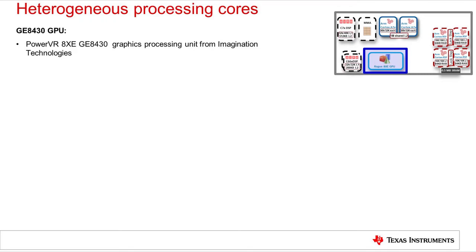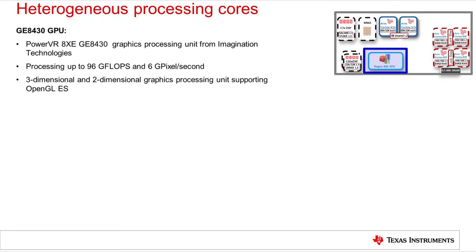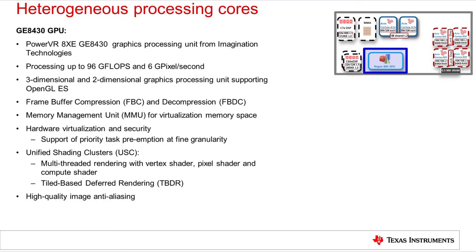The GPU or graphics processor unit on the Jacinto 7 SoC is based on the Series 8 XE PowerVR core from Imagination Technologies. The initial device derivatives will support the GE8430 core, which supports roughly 100 GFLOPs and a fill rate of 6 gigapixels per second. Note that GFLOPs are dependent on exact application scenarios, so the best comparative performance measure for the GPU are standard benchmarks which TI will make separately available. The GPU supports industry standard OpenGL ES libraries, facilitating use of standard graphics code. The GPU implements frame buffer compression and decompression hardware which works in conjunction with the decompression in the display subsystem to minimize DDR memory bandwidth. The GPU also has an independent microcontroller core which manages and schedules hardware resources such as the unified shading clusters.